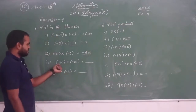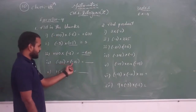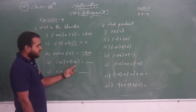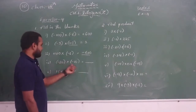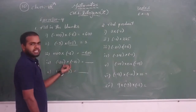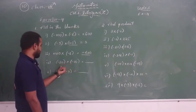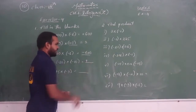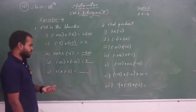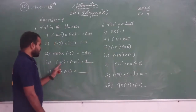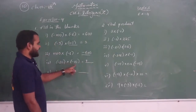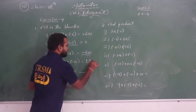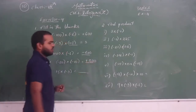Now see the next one: minus 20 into minus 10. Both are minus. Whenever we multiply a negative integer with a negative integer, the product is a positive integer. 20 times 10 is 200, so the answer is plus 200.